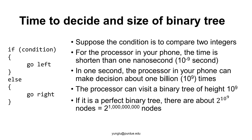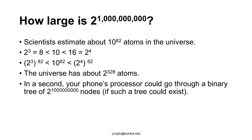If this binary tree is perfect, then the tree has approximately 2^(1 billion) nodes. Scientists estimate that the universe has about 10^82 atoms. Since 2^3 = 8 is smaller than 10 and 2^4 = 16 is greater than 10, 10^82 is between 2^(3×82) and 2^(4×82). Using the bigger bound, the universe has approximately 2^328 atoms. That is a pretty big number. However, it is not comparable with 2^(1 billion).